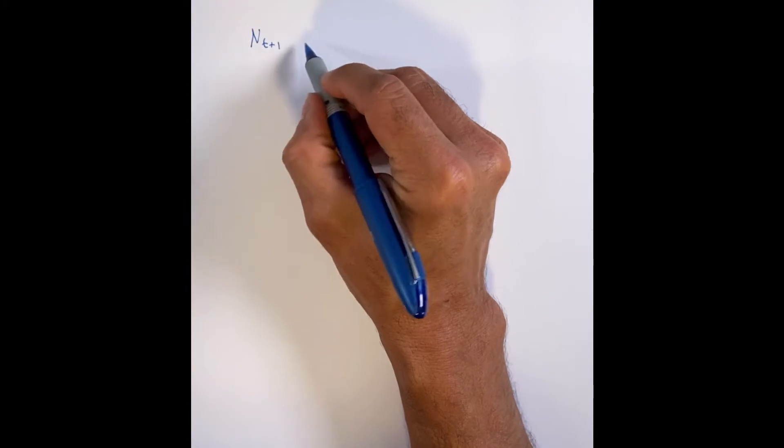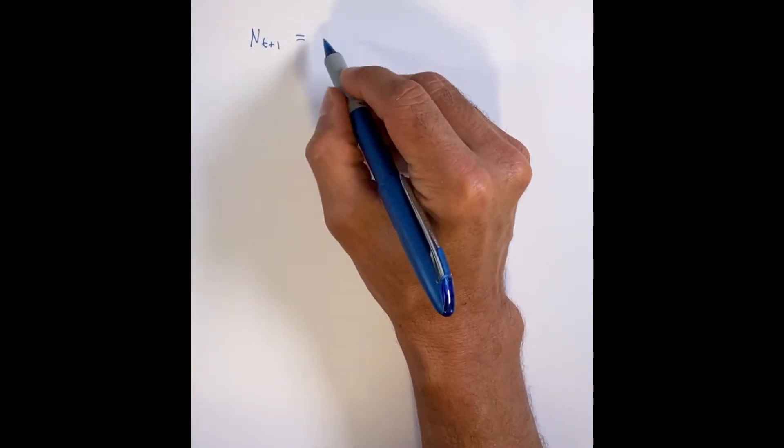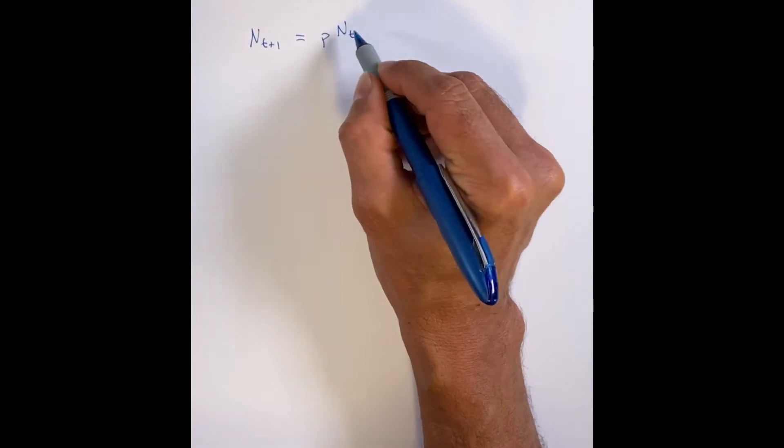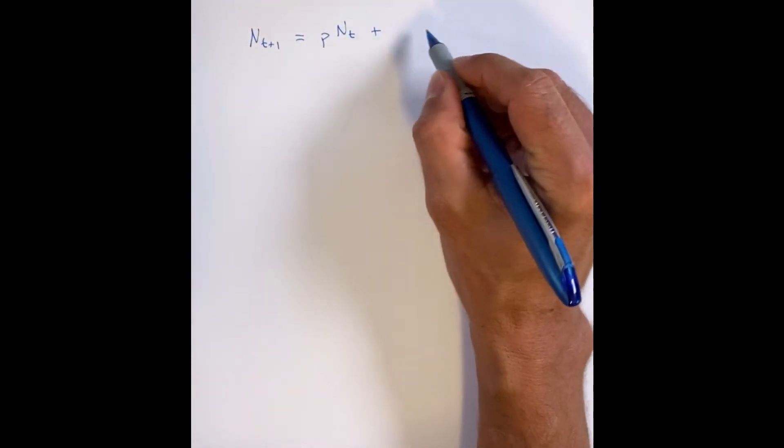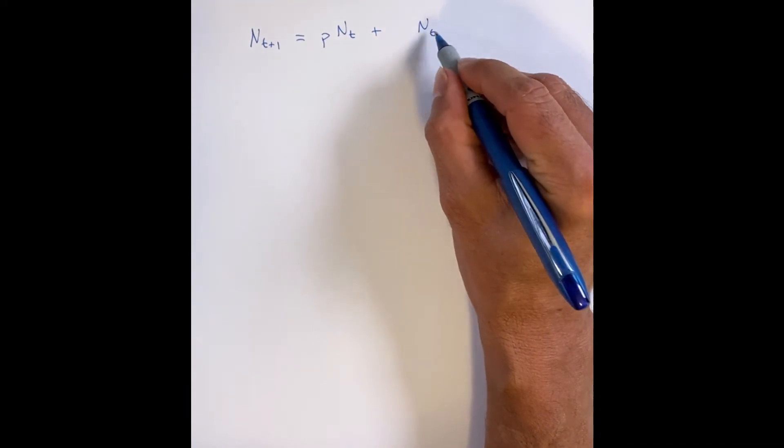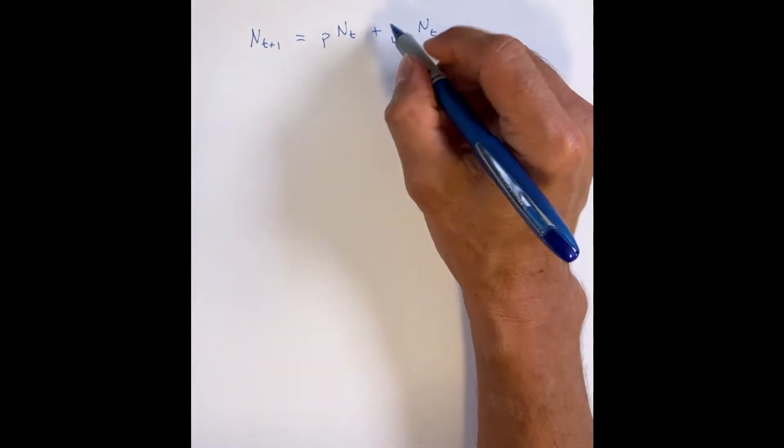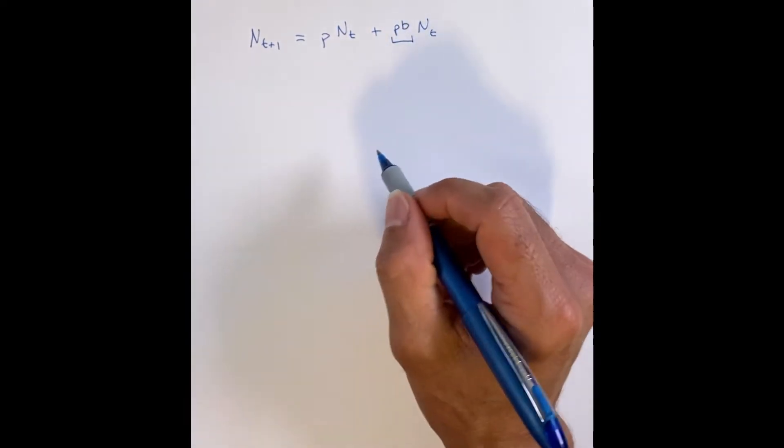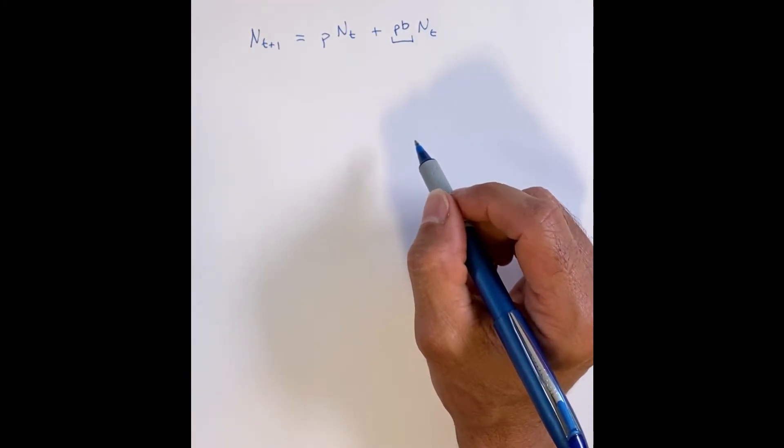So let's imagine we have a population at time t plus one that we want to predict. We need to figure out how many individuals just make it to the next time step, the proportion p, and of those individuals that make it to the next time step, what fraction actually make new individuals? That's p times b. You could think of b as the births, perhaps.